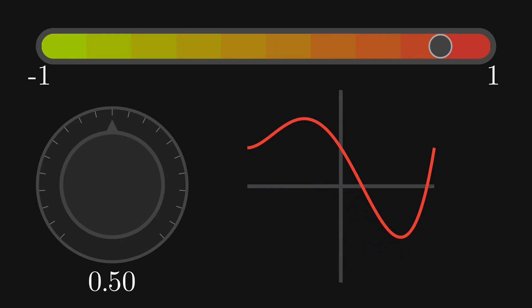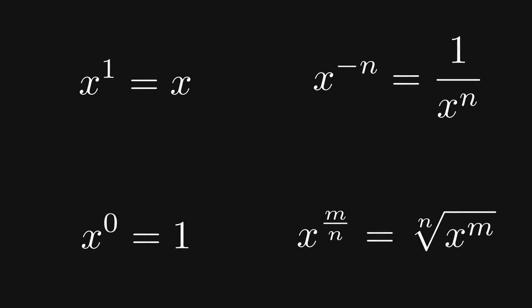Take exponents as an example. We initially define them through repeated multiplication, but with the right perspective, we can assign sensible values to inputs like 0, negative integers, and even rational numbers.